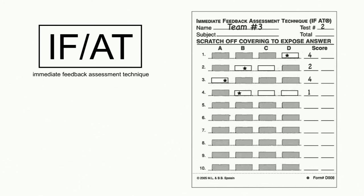You can buy scratch-off stickers on Amazon very cheaply - just Google scratch-off stickers, cut them to size, and stick them over the answers. Or you can buy IFAT cards from Epstein Educational, which is essentially the only company that sells them. They have pre-filled answer keys, so you buy a key - for example D, B, A, B - and there are about 20 different keys. Make sure to buy variety so residents don't catch on that it's always the same answers.